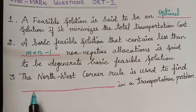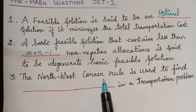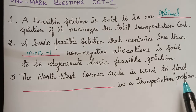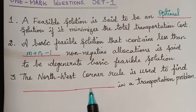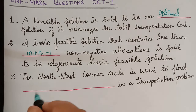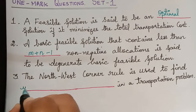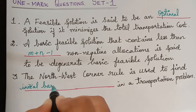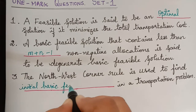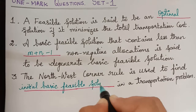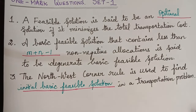The next question is: the northwest corner rule is used to find dash in a transportation problem. The northwest corner rule is used to find the initial basic feasible solution for a transportation problem.